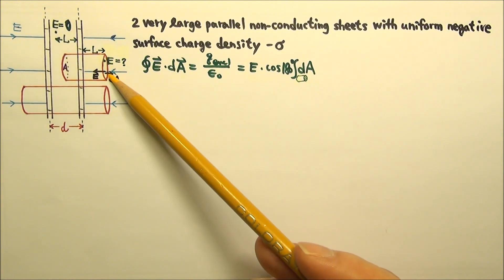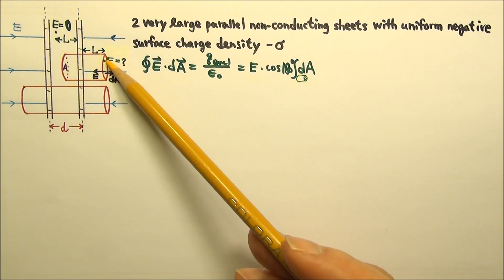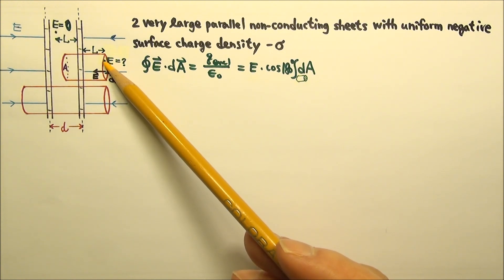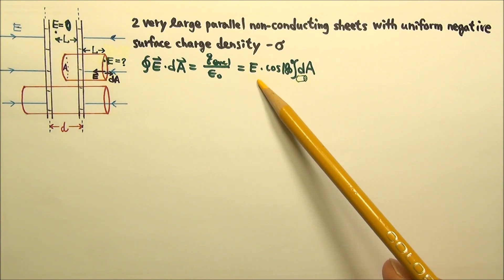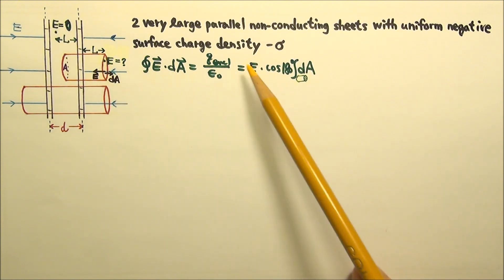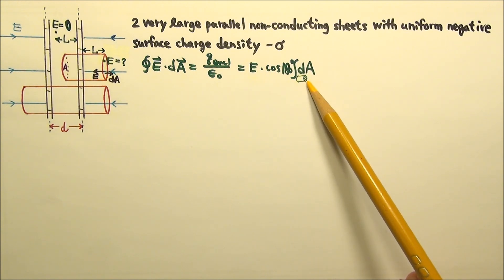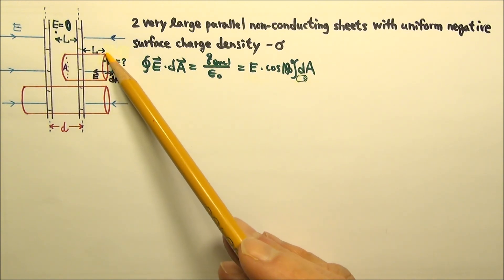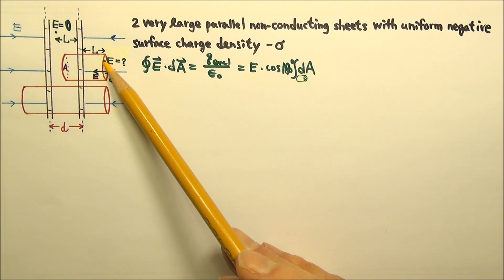When we made this Gaussian surface, we had to make it go through this point we're interested in. So when we solve this e, it would be the field at this location. Since this e is the electric field at the right end, the right end of the Gaussian surface must go through this point.